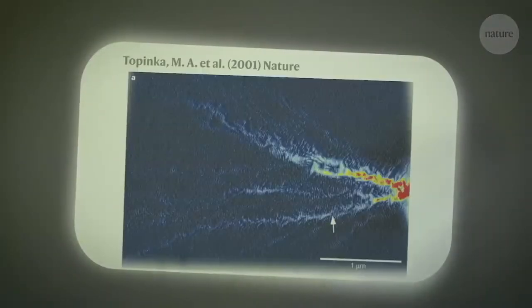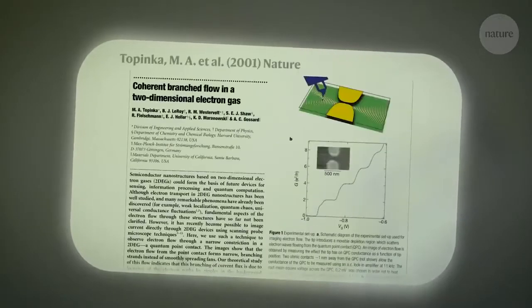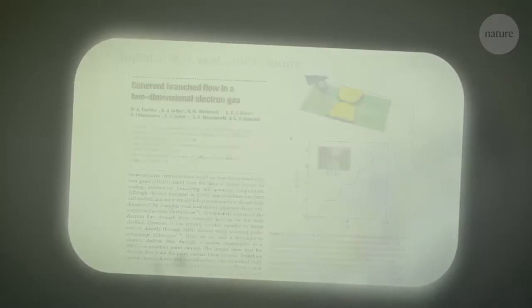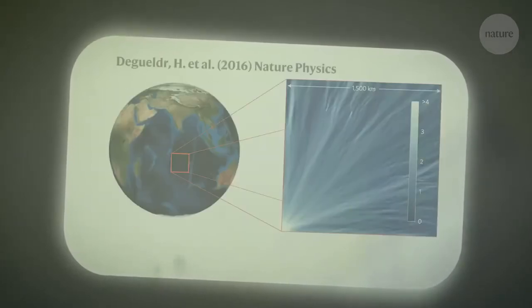Researchers first spotted this wave behavior in 2001 in electrons, which can behave like waves. Scientists have also spotted branched flow with microwaves and have even seen hints of it in tsunamis.